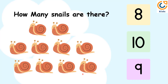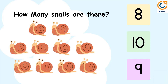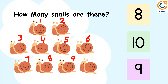How many snails are there? Let's count the number of snails. 1, 2, 3, 4, 5, 6, 7, 8, 9, 10. There are 10 snails. So the answer is 10.